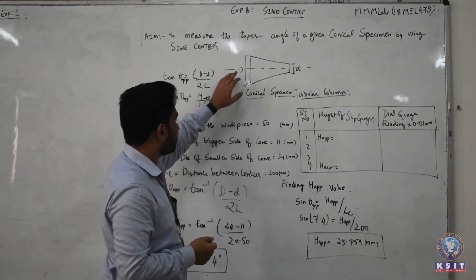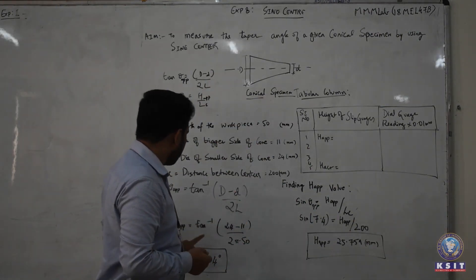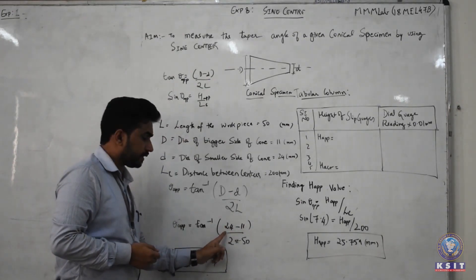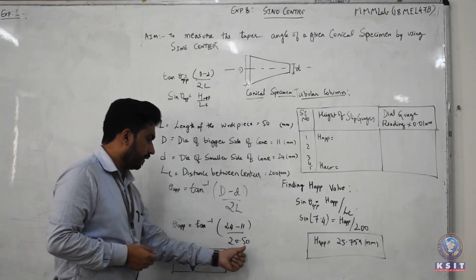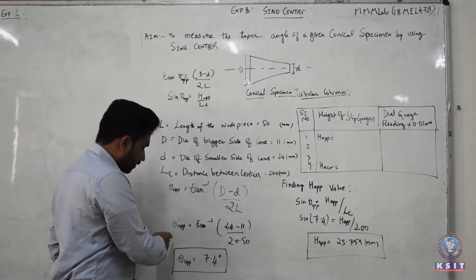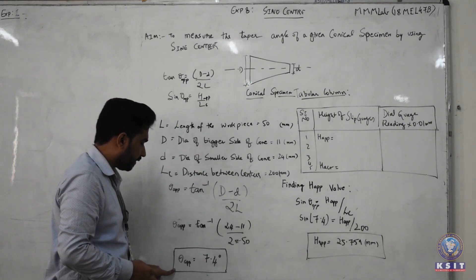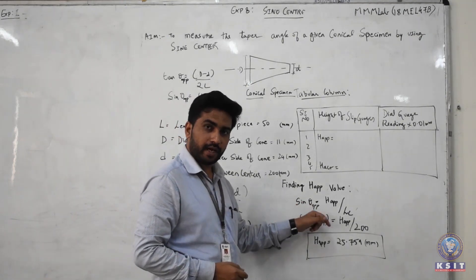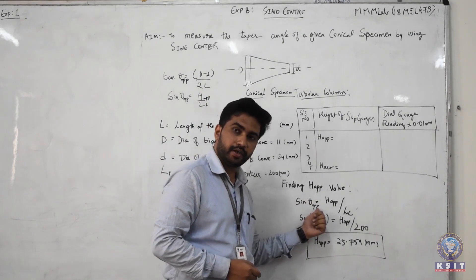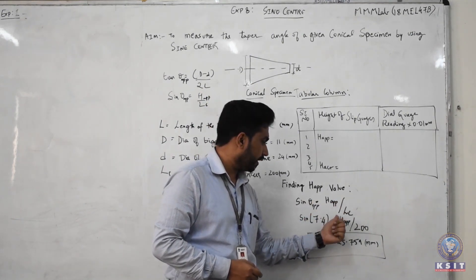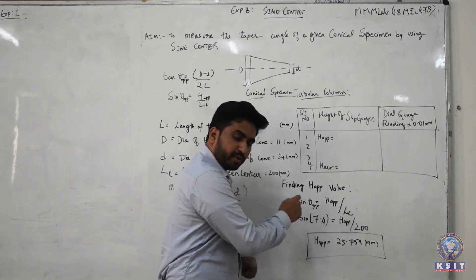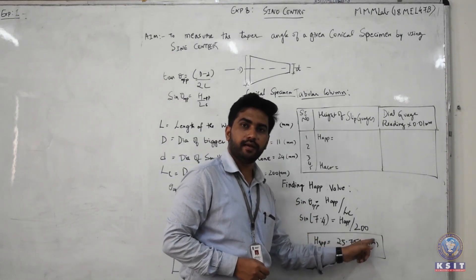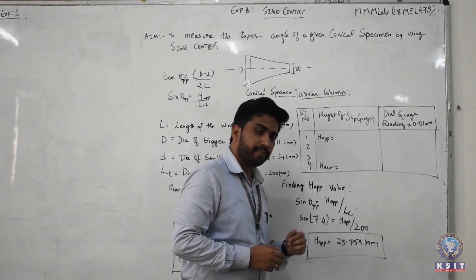Let us take an example. If we put the value of D = 24 mm as the largest diameter and d as the smaller diameter, and the length of the specimen is 50 mm, then we will get the theta approximate value as 7.4 degrees. Applying this to the formula sin(θ_approximate) = H_approximate / Lc, we can find the approximate height value. In this case it is 25.759 mm. This will be the approximate height.